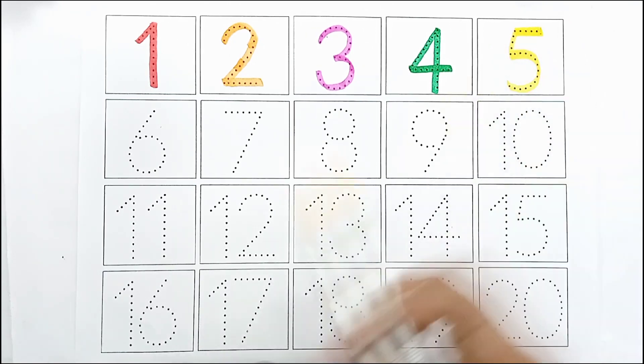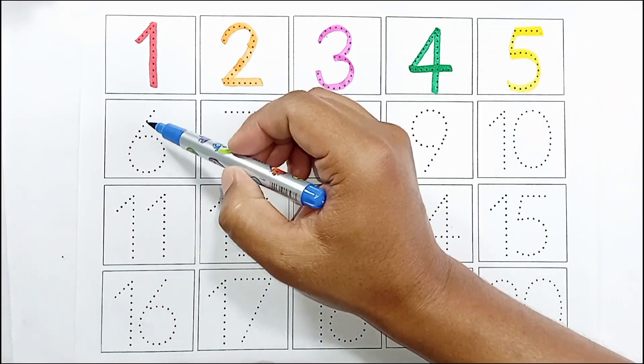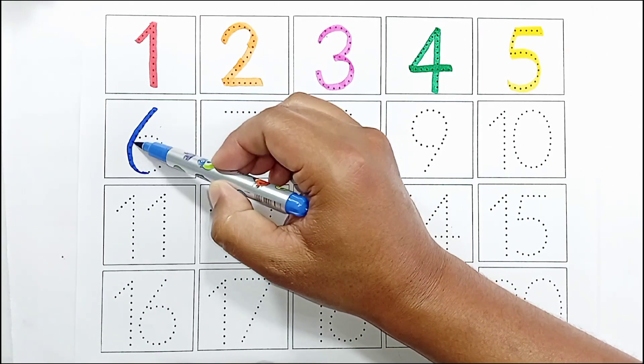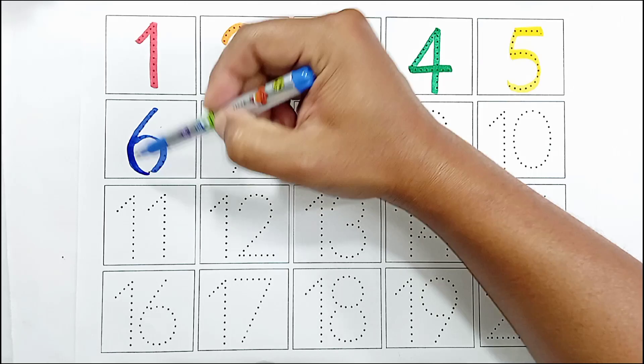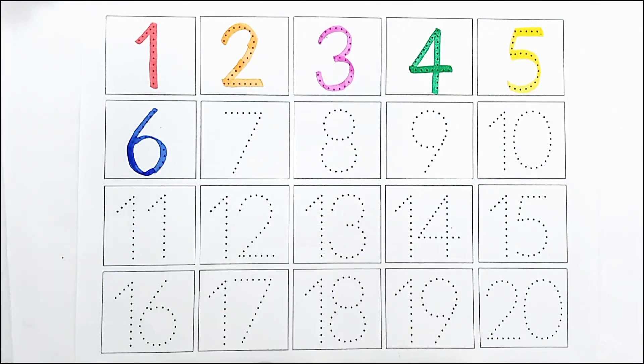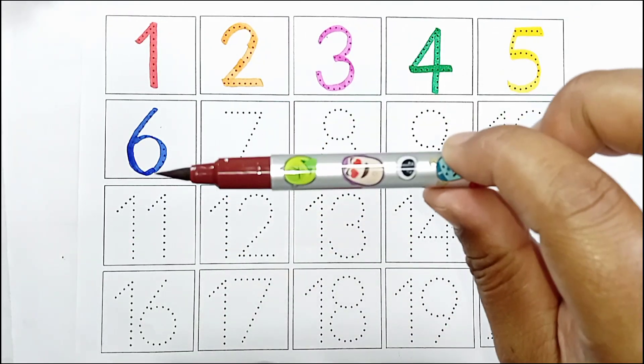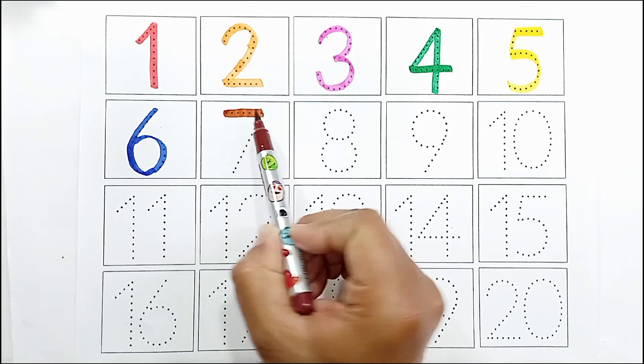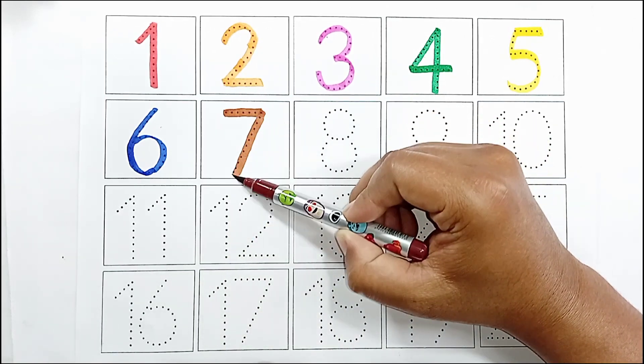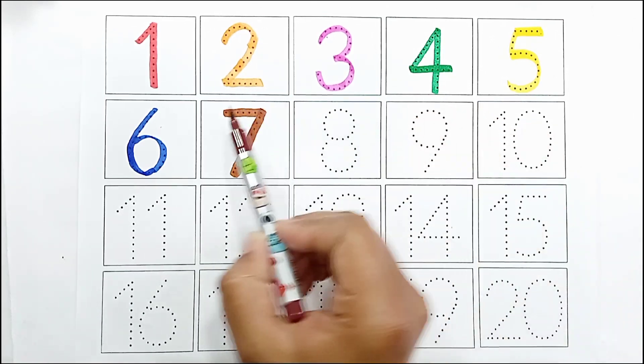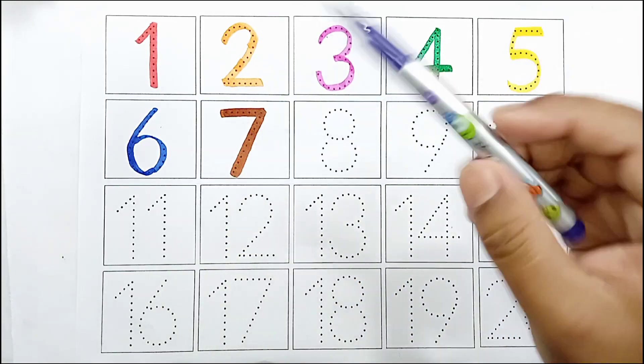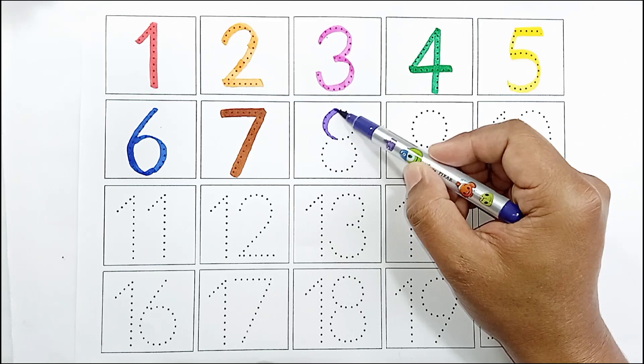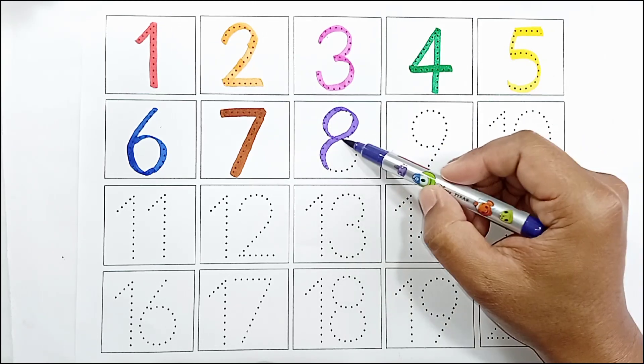Five. Blue color. Six, six. Brown color. Seven, seven. Violet color. Eight, eight.